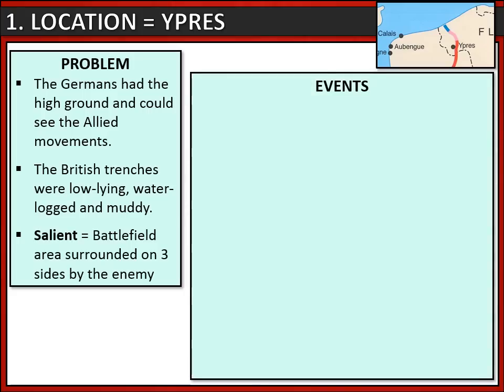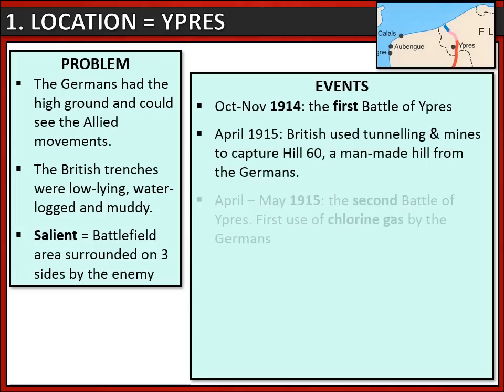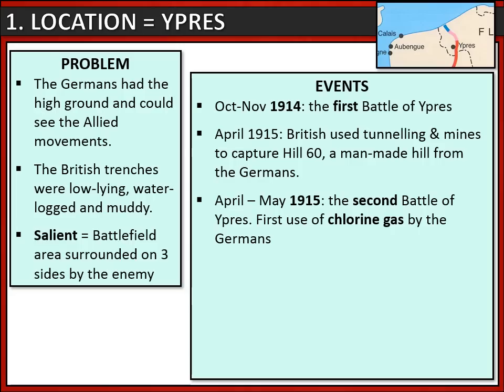There were three battles that took place in Ypres. The first, very early on in the war in 1914. The second in 1915. Now it's the second battle of Ypres that we need to know about because this was the first time that gas was used as a weapon, and it was the Germans who used chlorine gas in the second battle of Ypres against the British.